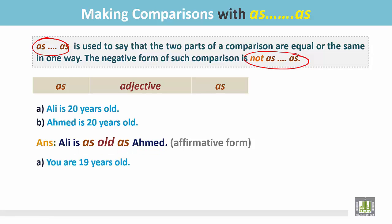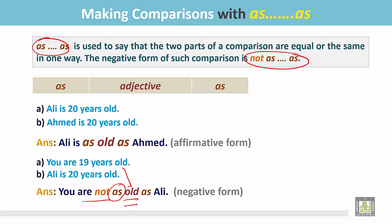Here are other two examples. You are 19 years old. Ali is 20 years old. These two subjects are of different age. So they are not of the same age. When we join them, we write: you are not as old as Ali. This is the negative comparison.